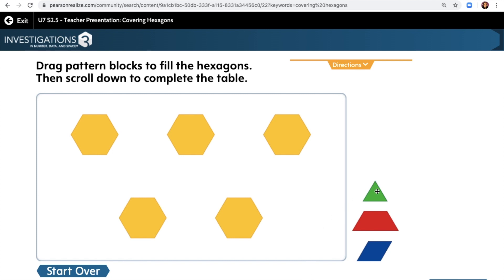So for example, here we have triangles, trapezoids, and rhombuses, and we're going to see how many pattern blocks we need to fill a hexagon.